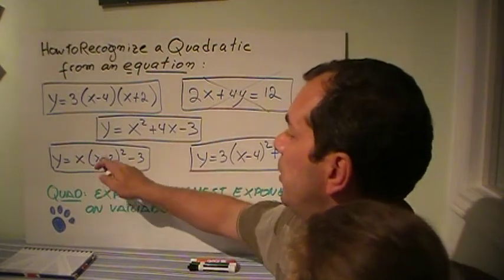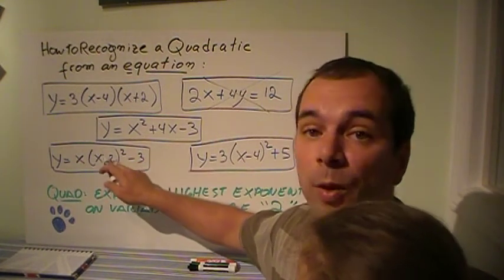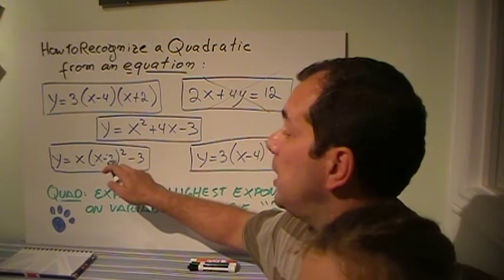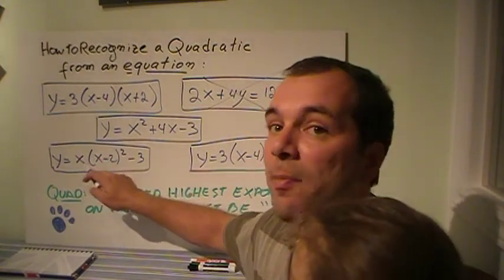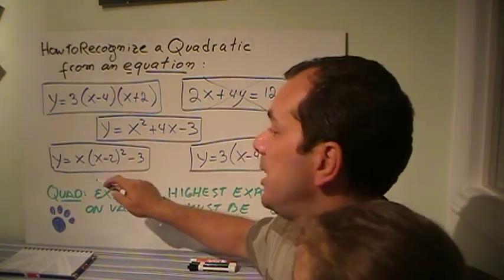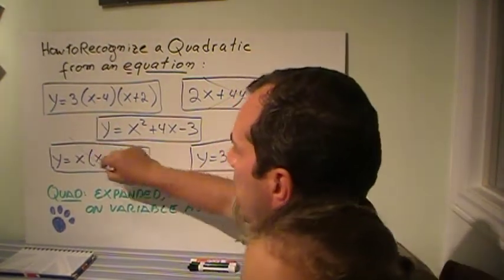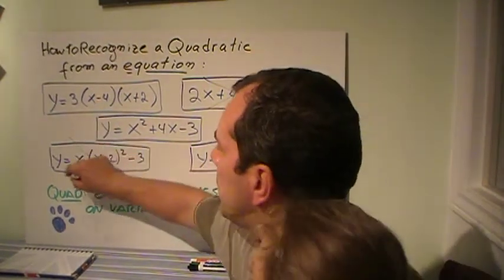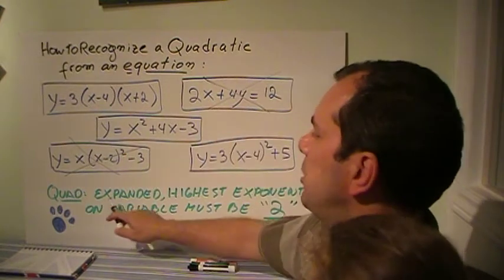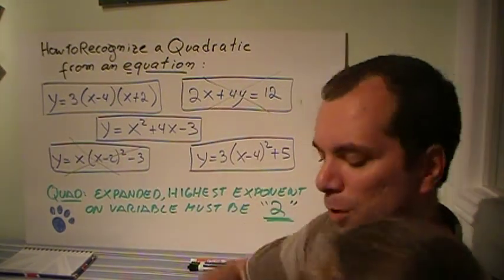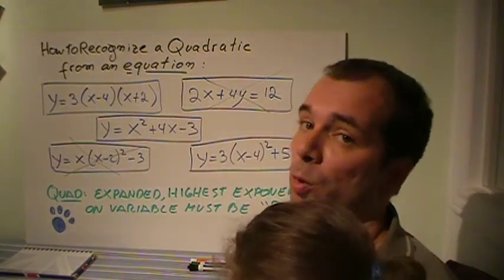This one over here — when I expand x squared, I'm going to have x squared, but then I'm going to multiply by another x, and that means it's going to be x to the power 3, and that makes it not a quadratic. So we recognize a quadratic because when expanded, the highest exponent on the variable would be equal to 2.